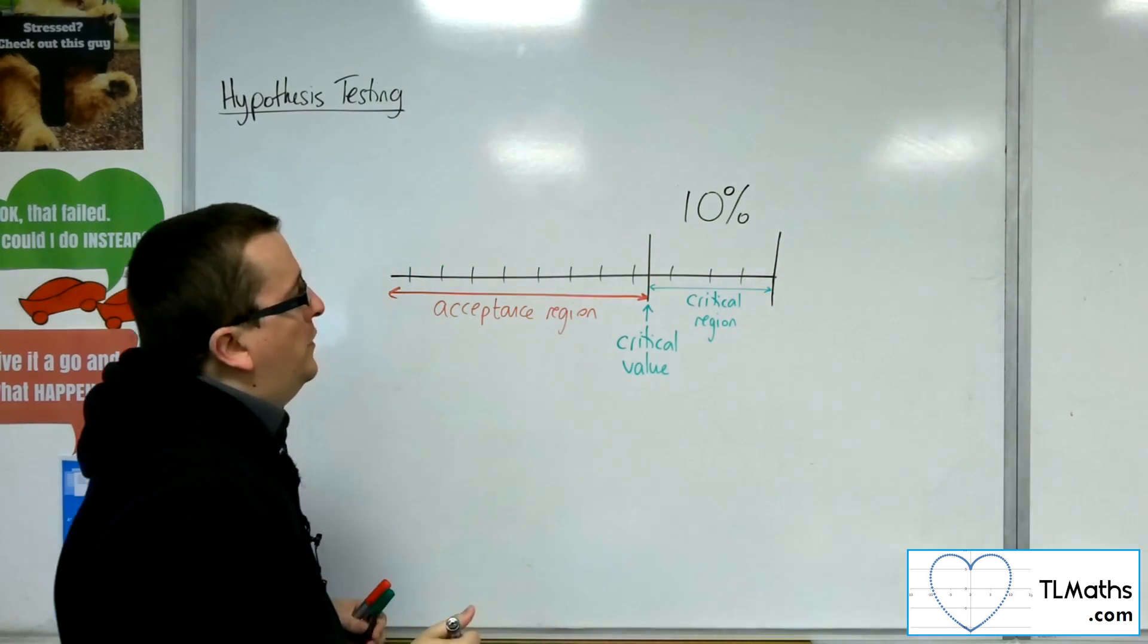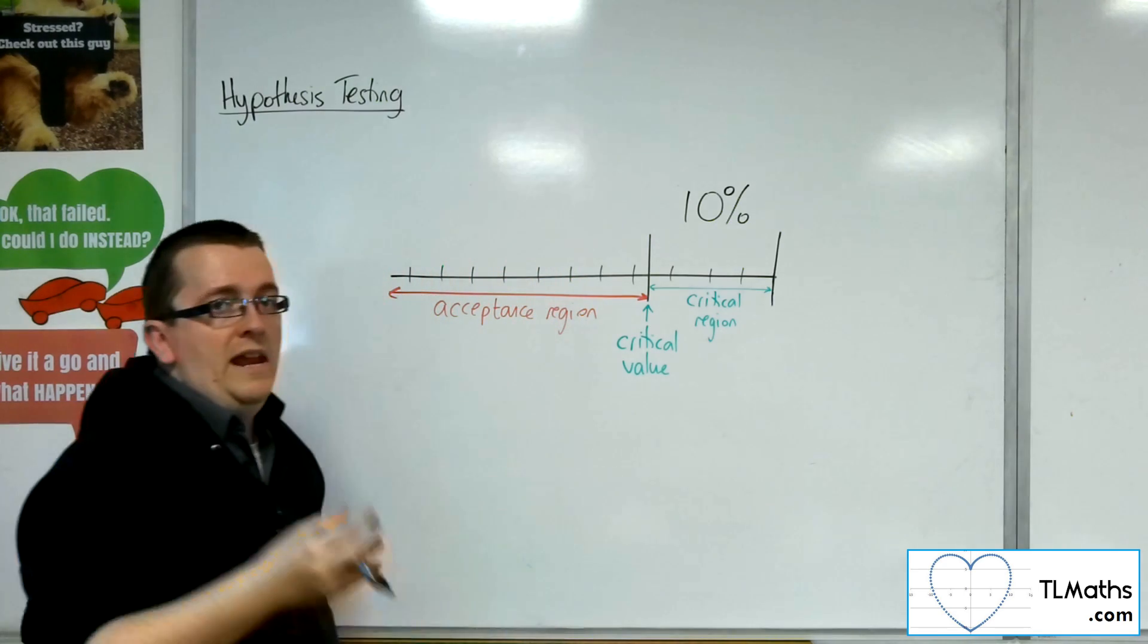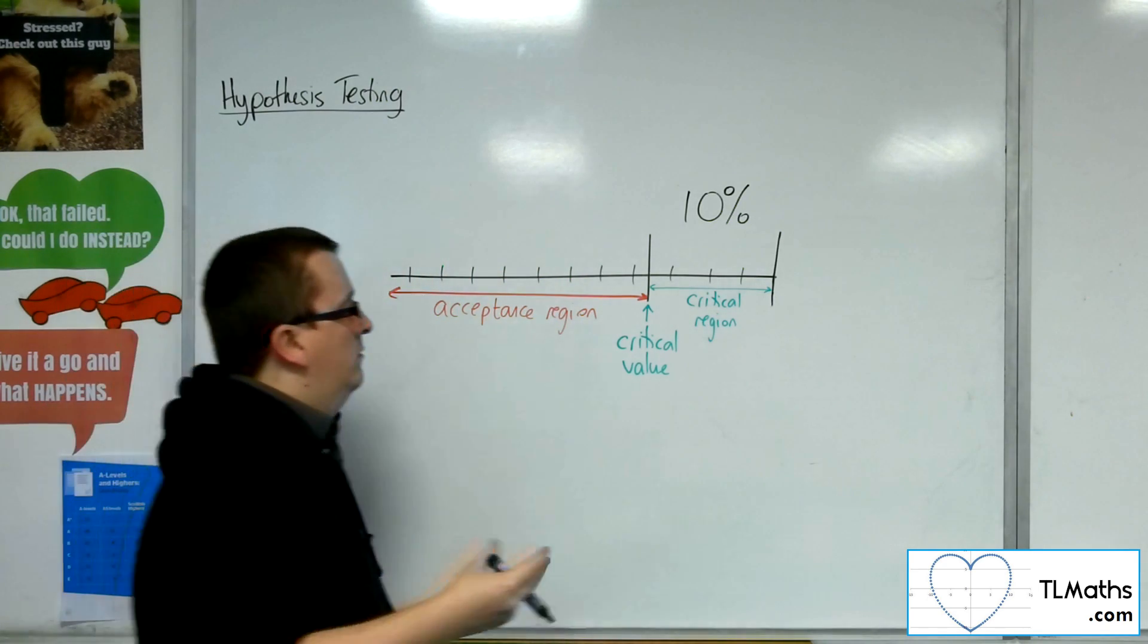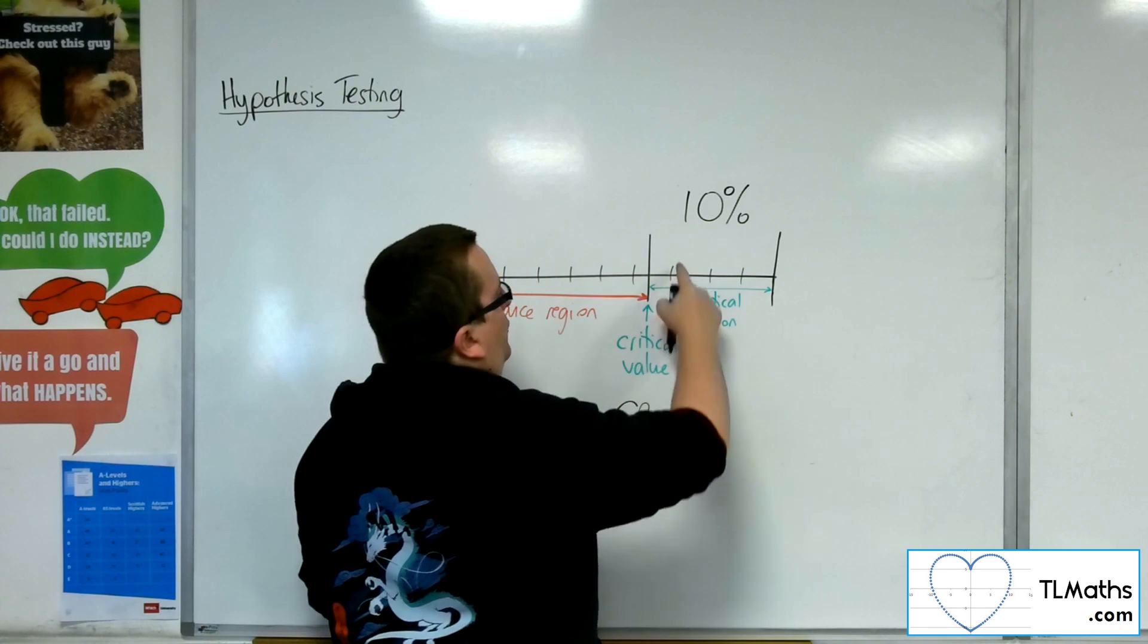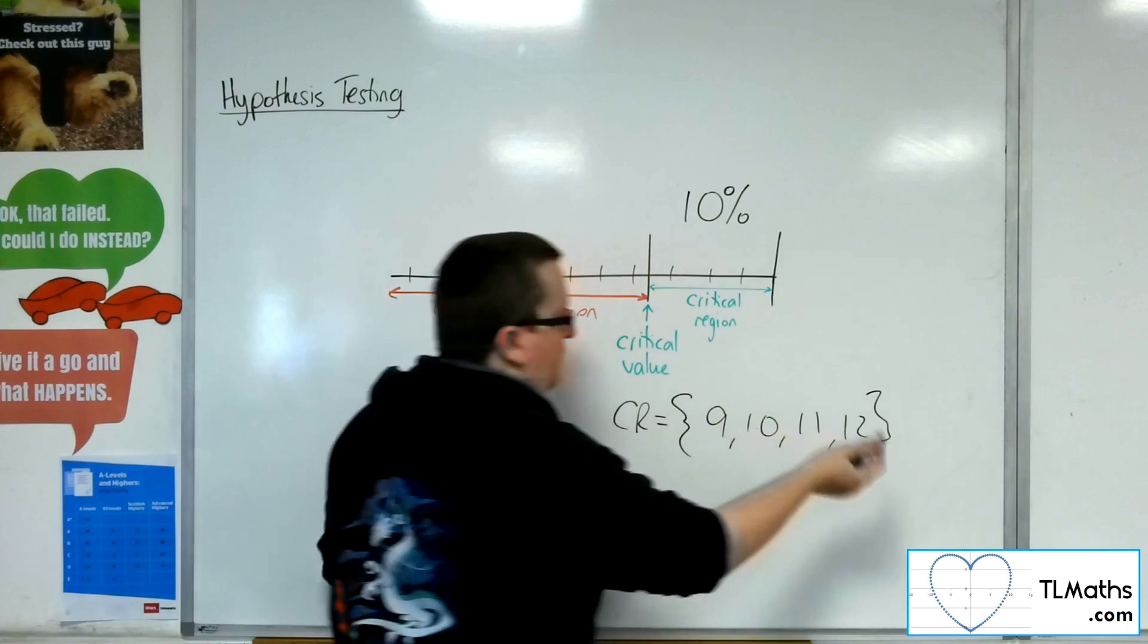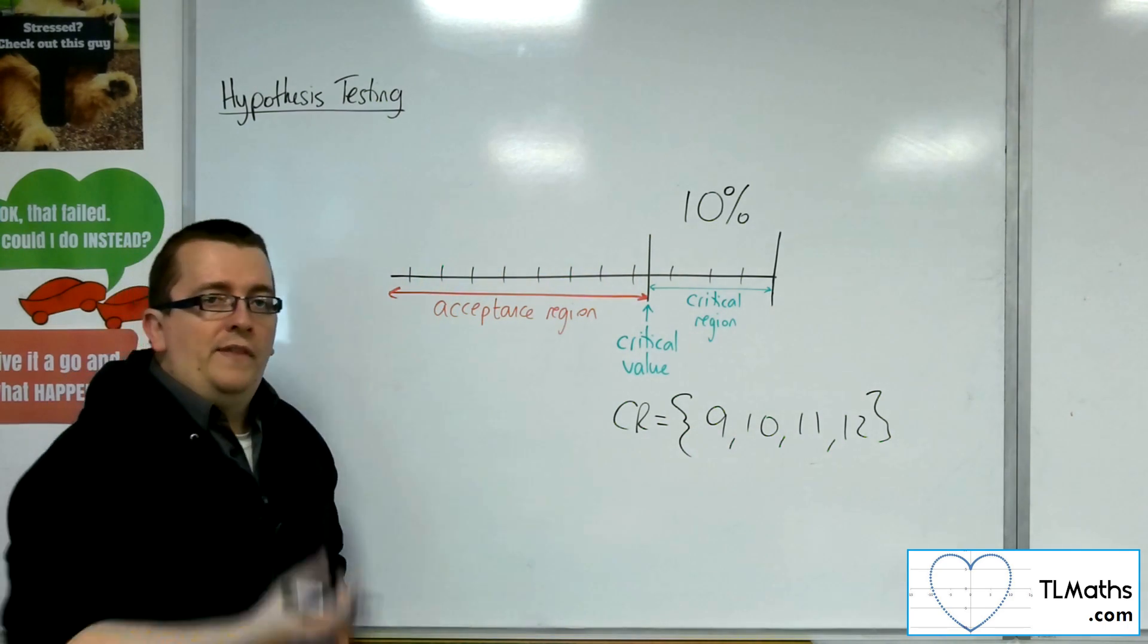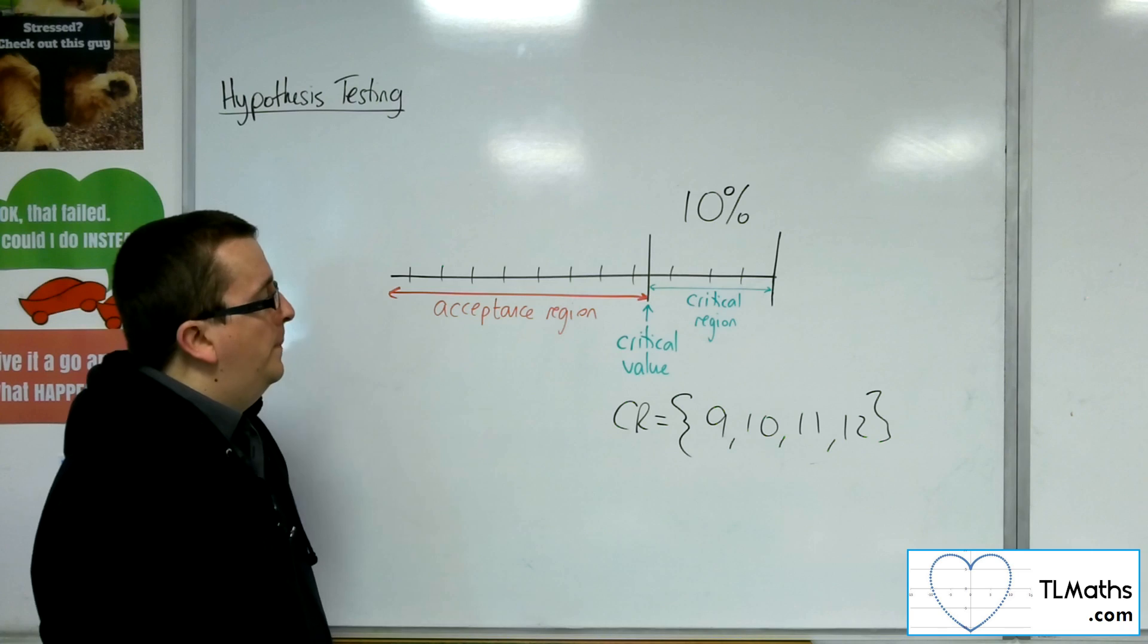So maybe we've got 9, 10, 11, and 12 are in the critical region. So we may have a critical region that's equal to 9, 10, 11, and 12. So if you observe any of those four numbers, they are in the critical region, and so you'll be able to reject the null hypothesis.